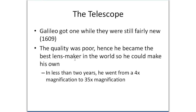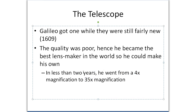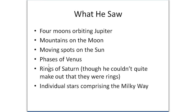So he decided to become the best lens maker in the world — as a sort of side job. He just got better than anybody else in the world at it. What he was able to do in less than two years was go from a fuzzy 4x magnification to a fairly clear 35x magnification lens — almost a 10 times increase in magnification. And what he saw through this telescope would really revolutionize the world.